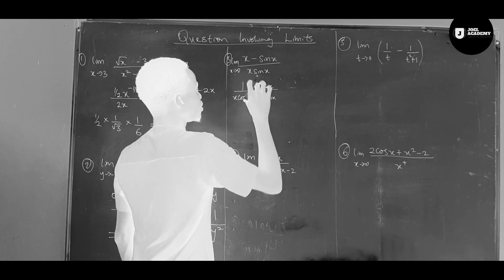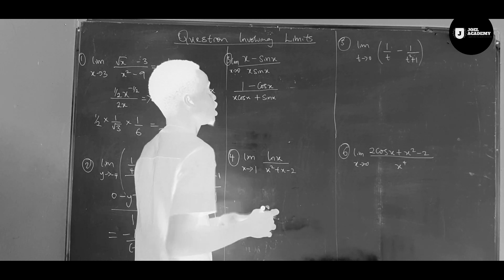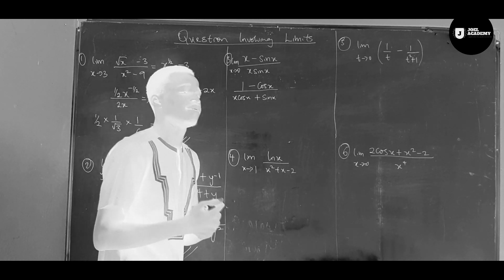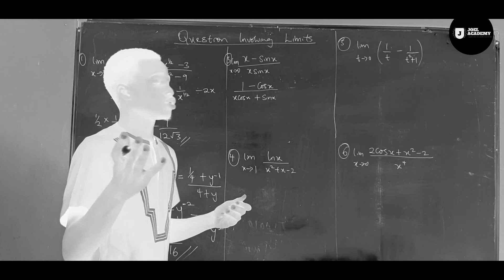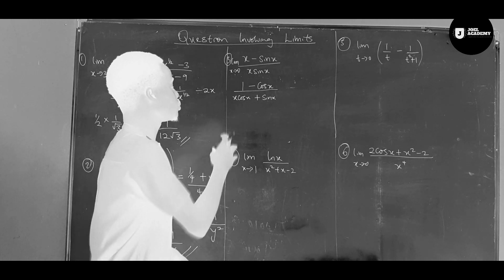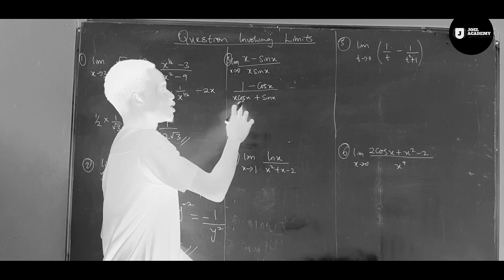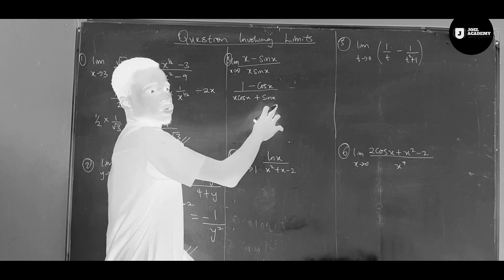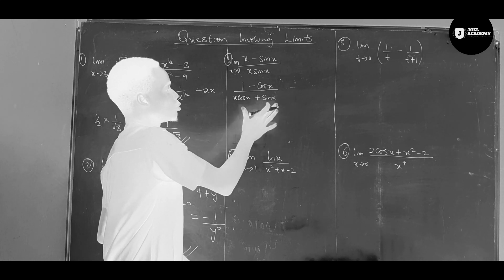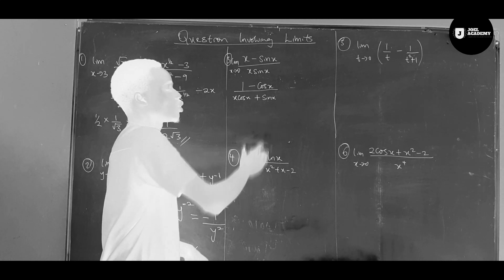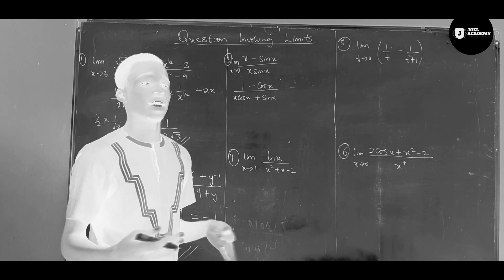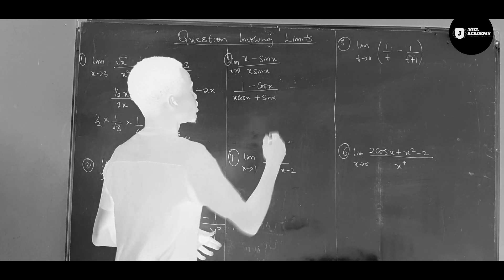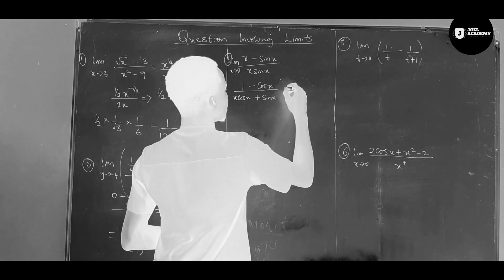So this gives us our result. But let's substitute zero to see if we can evaluate it. When we put in zero, sin zero equals zero and cos zero equals one, but we still get zero over zero. So we have to differentiate again.